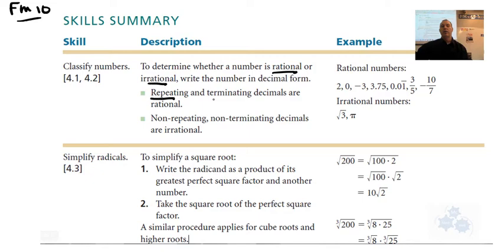Well, repeating or terminating decimals are rational. So if it's in decimal form and the decimal stops, like this one right here, 3.75, that's a terminating decimal. So that's rational. If it repeats, like this one over here, 0.01 repeating, see that repeating sign? That is rational, because that can be written as a fraction. And of course, if you have a fraction or a rational like this, positive or negative, that's rational.